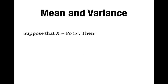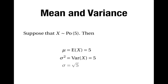For example, suppose that x has the Poisson distribution with parameter 5. Then the mean will be 5, and the variance will also be 5, which means that the standard deviation, which is the square root of the variance, will be the square root of 5.